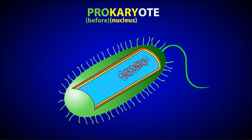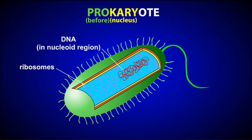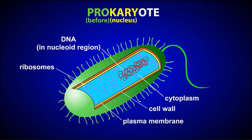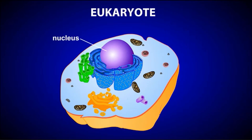The inside of a prokaryotic cell is an open unit with no compartments and no membrane-bound organelles. Small structures called ribosomes are scattered throughout the cytoplasm. The cell's DNA is located in a region called the nucleoid region, which is not enclosed by a membrane. Prokaryotes also have a cell wall surrounding the plasma membrane, composed of complex polysaccharides, and often possess one or more flagella for movement.